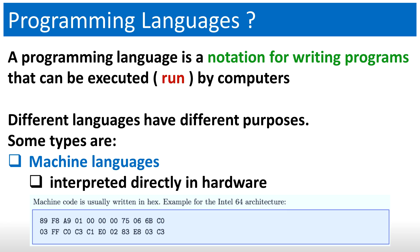Different languages have different purposes. Some are like machine languages — these are interpreted directly in the hardware. The machine language is the lowest level; it's the exact code that the computer or device will execute. As an example, we have the machine code for an Intel 64 architecture machine language. As you can see, it's just a series of bytes that are understood by the CPU, decoded and executed by the CPU.